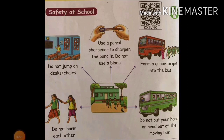Next we are going to see safety at school. What are the safety measures we have to follow as shown in the picture? First: do not jump on desks or chairs. It is dangerous — you may fall and get hurt. So don't do this action at school.